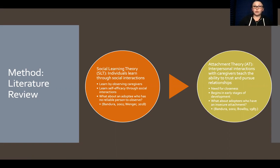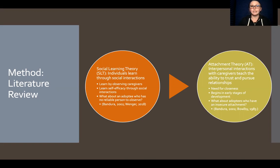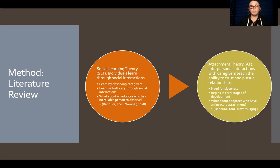Social learning theory argues that individuals learn through social interactions — we learn by observing caregivers, who provide a blueprint for interaction. Something I thought about is: what about an adoptee who doesn't have a reliable person to observe? I myself am adopted, and I thought about a child who doesn't have a caregiver in the first couple of months or years of their life — someone to model appropriate behaviors through social interactions. What happens when that doesn't happen?